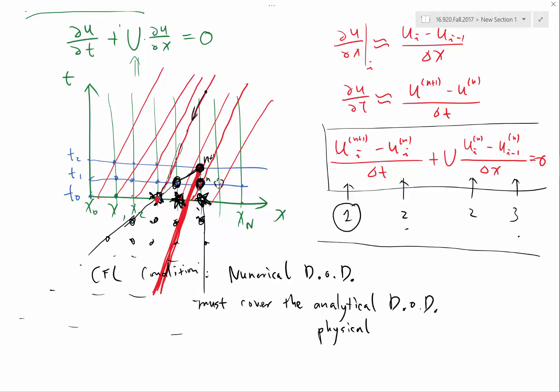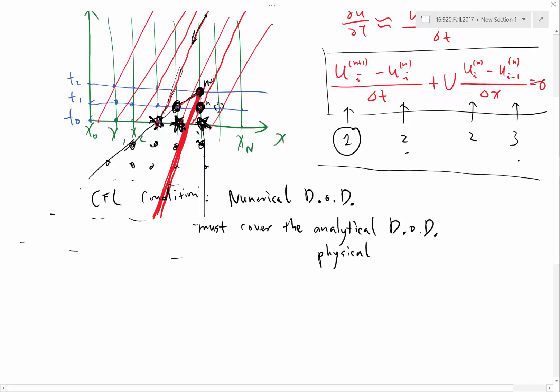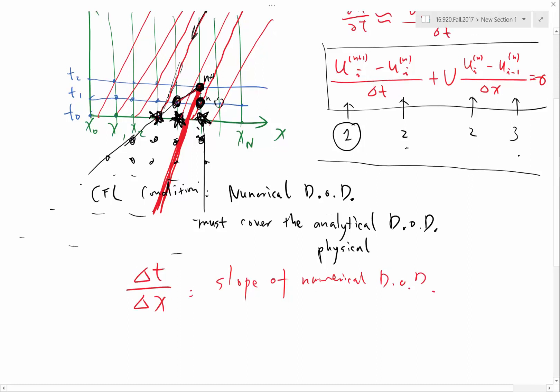And this puts a severe restriction on what time step size we can use. So, for example, here, let's compute what the slope of this line is. The slope of, what is the slope of the numerical domain of dependence? Δt/Δx is the slope of numerical domain of dependence. What is the slope of the physical domain of dependence?